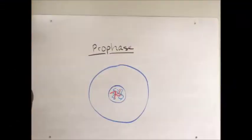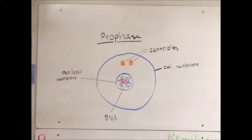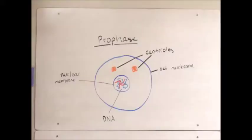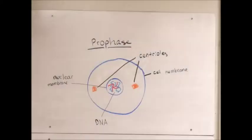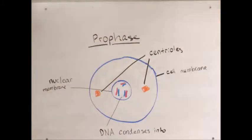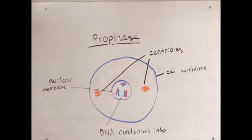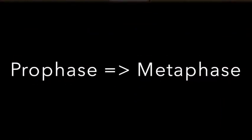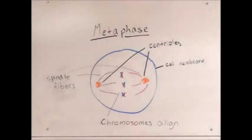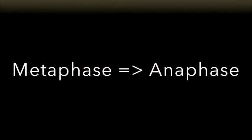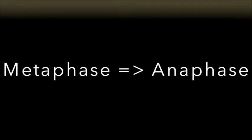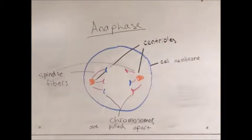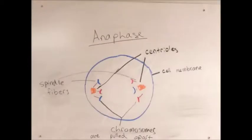Prophase comes first — the chromatin condensing, the cilia and nucleus disappear, centrioles move to the ends, the mitotic spindle forms. Next is metaphase — the chromosomes align, motor proteins power the movement to the centerline, spindle fibers catch the centromeres in the middle of chromosomes. Now starts anaphase — chromosomes move farther apart to separate sister chromatids.